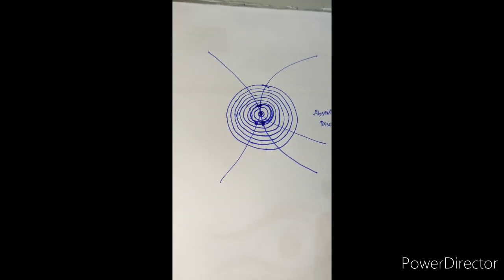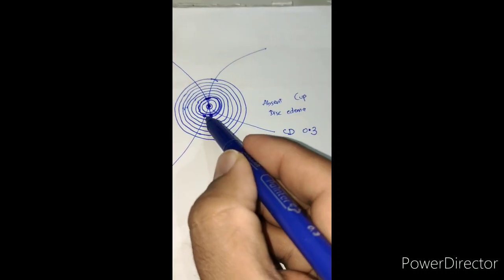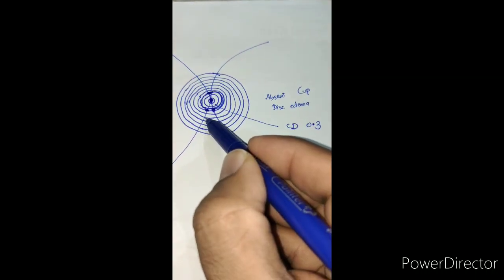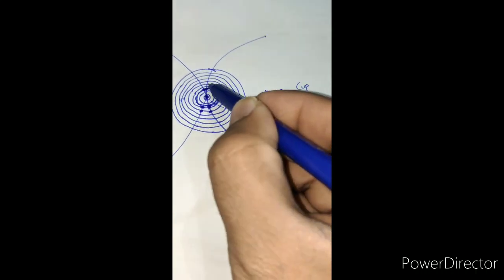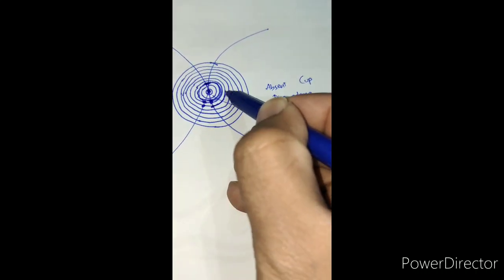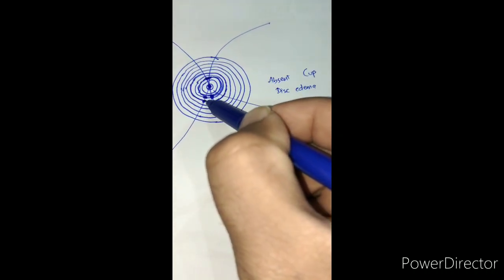...so you have to check the vertical cup-disc ratio. Again and again I am stressing on the vertical thing. Now if you add two more lines to the central three lines, now it is almost half of the circle.